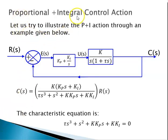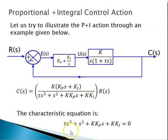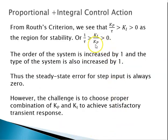For proportional plus integral (PI) control action, the controller has a proportional term K_p and an integral term K_i over s. Setting aside the disturbance, the characteristic equation order increases by one. From Routh's criterion, we see that K_p/tau must be greater than K_i and both must be greater than zero. Working through the Routh array (s³, s², s¹ rows) with terms tau, K_p, K*K_i, we find the stability region. The steady-state error for step input is zero.